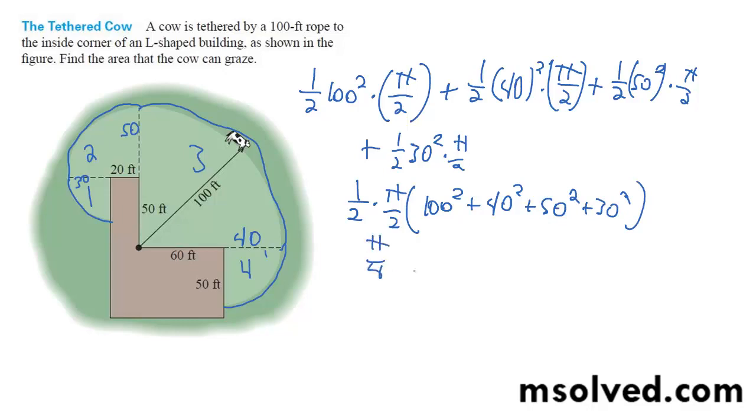And we're left with, so that's 10,000 plus 1,600 plus 5 times 5, so that's 2,500 plus 900.